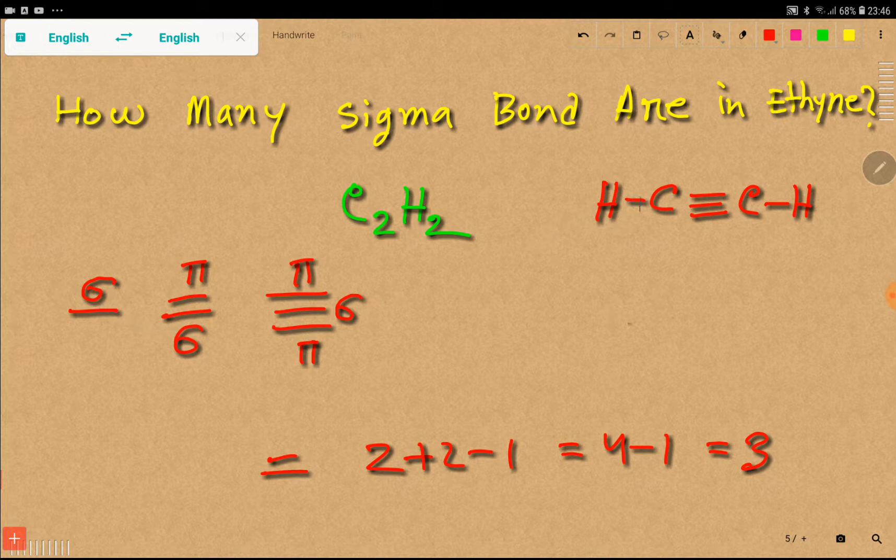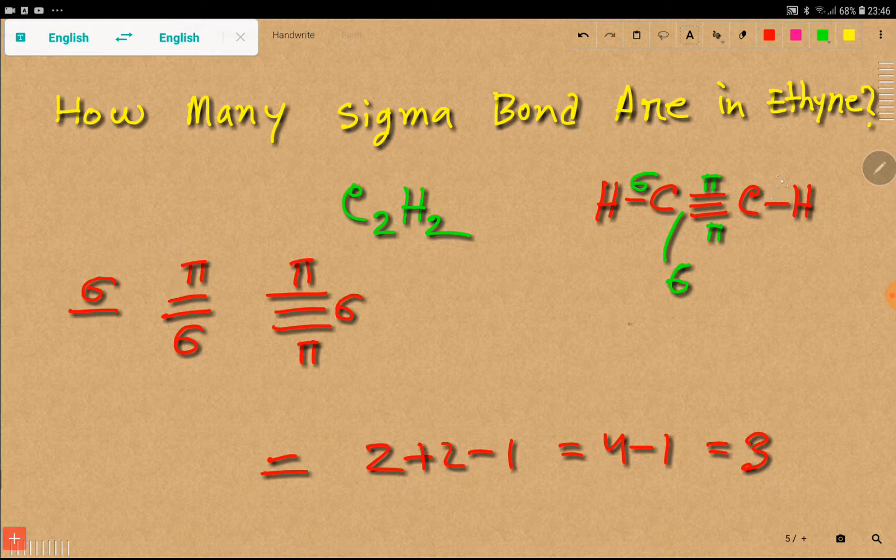So, look at this structure of ethyne. Ethyne, here, single bonds, that is, this bond means we have one sigma bond. This triple bond means we have two pi bonds and one sigma bond. And this is single bond means this is sigma bond. So, basically, we are getting one sigma, two sigma, three sigma.